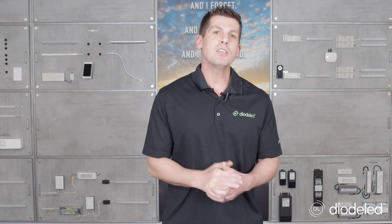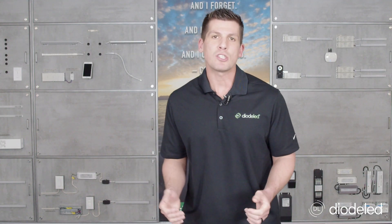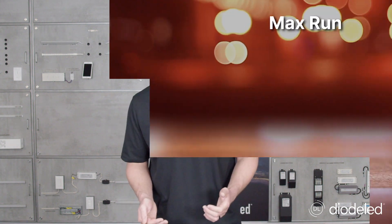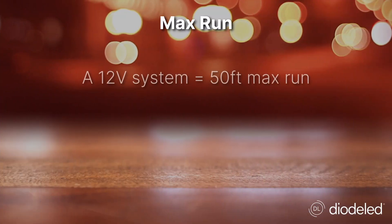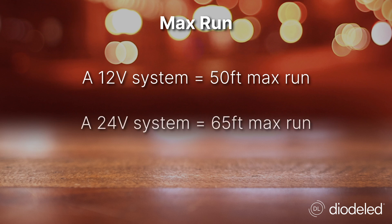Maximum run refers to the length limits when installing LED tape light. For example, a 12-volt system might have a 50-foot max run versus a 24-volt system which might have a 65-foot max run.